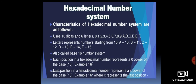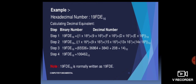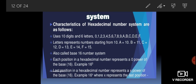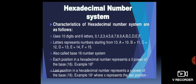Hexadecimal works the same way. It uses 10 digits and 6 letters: digits 0 to 9 and letters A to F. The letters represent numbers starting from: A equals 10, B equals 11, C equals 12, D equals 13, E equals 14, and F equals 15. It is also called the base 16 number system. Each position in a hexadecimal number represents 16 raised to the power 0 at the rightmost position, and the same pattern applies here as well.